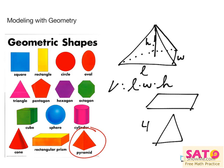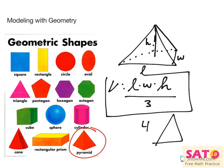There's a catch, though. That's normally our volume formula for a rectangular prism. But this is a pyramid. So what we need to do is divide by three. That would be our volume for a pyramid.